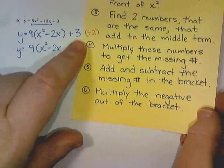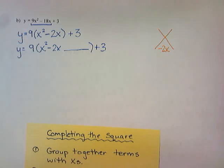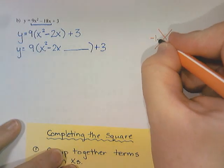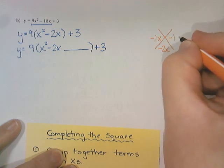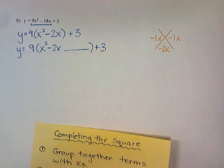And I did put a little note to myself here that I can divide by 2 to help me figure that out. So -2 divided by 2 is -1. So -1x and -1x would work. And then I would multiply those two together.